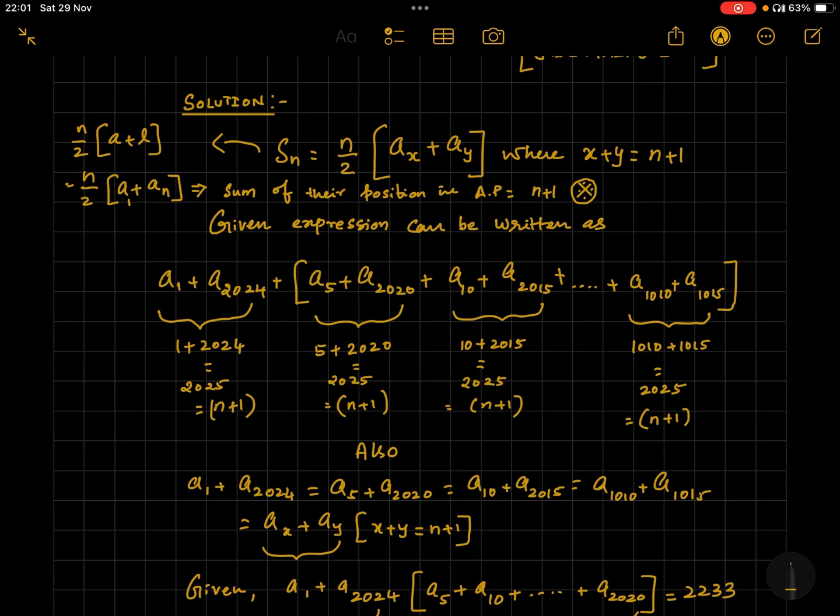And therefore it means we can group the terms which are equidistant. So for a5 plus a2020, you can see 5 plus 2020 is 2025, which is equal to n plus 1. Similarly, a10 and a2015, and so on up to a1010 plus a1015.